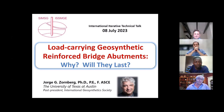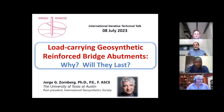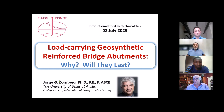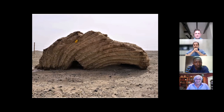Before explaining what a load-carrying geosynthetic reinforced bridge abutment is, he poses a question: what is the picture shown? Suggestions from the panel include the head of a dinosaur and — getting closer to the answer — old reinforced earth with grass or wooden sticks, and mud houses with sticks and timber in mud, similar to structures found in African villages.